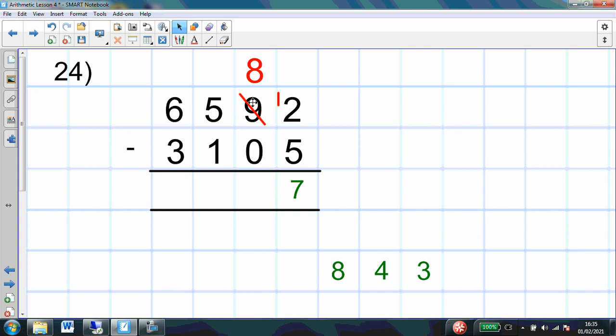12 ones take away 5 ones is 7 ones. This column looks very easy for us now. 8 take away 0. How quickly can you do 8 take away 0? Well done if you said 8. 5 take away 1. 4. And 6,000 take away 3,000 gives us 3. We just have to really make sure with these kind of questions that we look carefully at that exchanging.